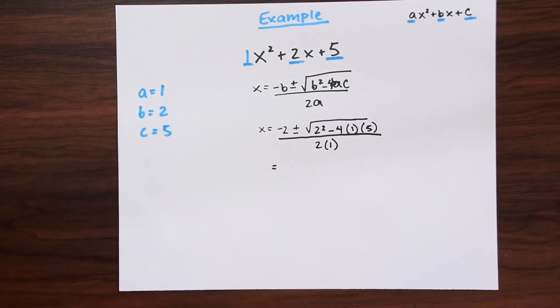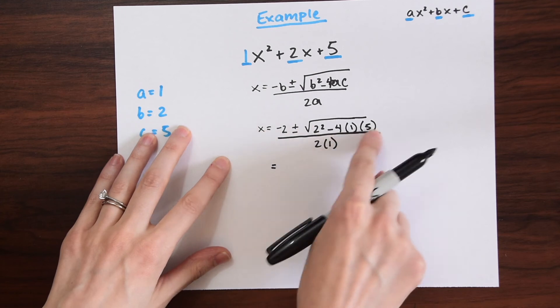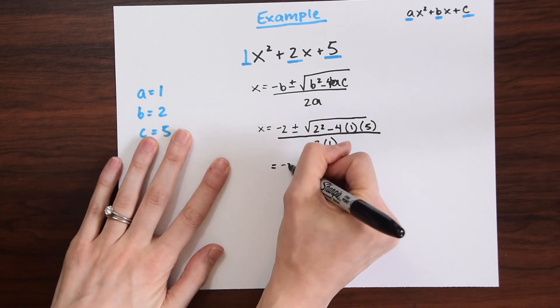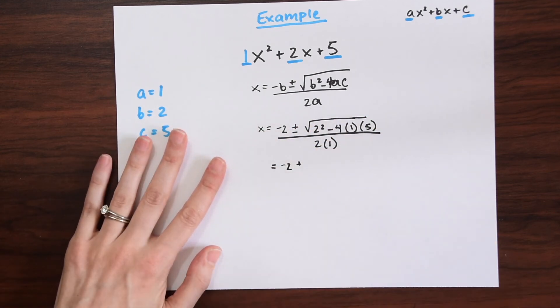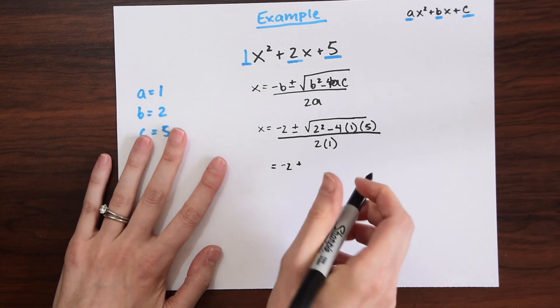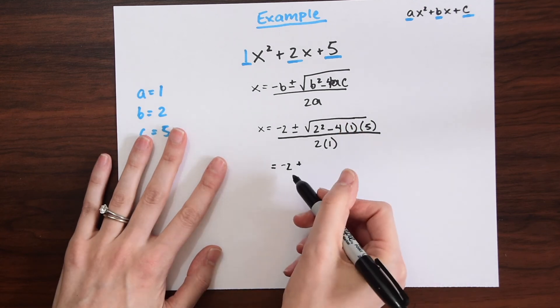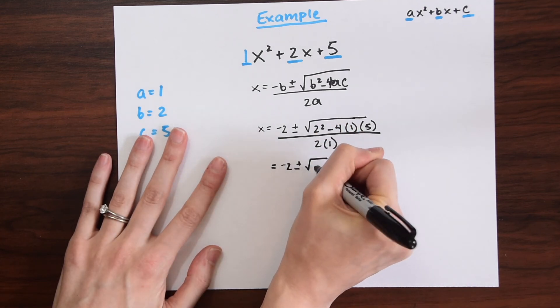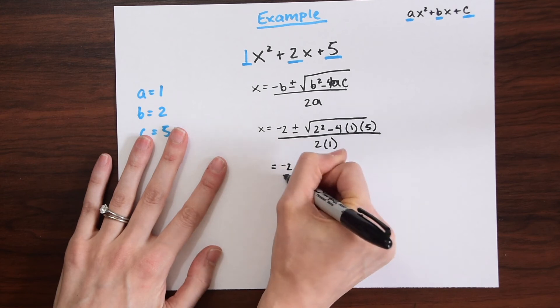This is a lot to look at and to calculate, so let's do this one step at a time. I always like to do everything under the radical first. So let's calculate that. You could just plug this into your calculator, super easy. When we do that, we get negative 2 plus or minus radical negative 16 over 2.